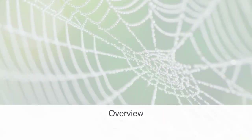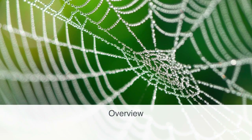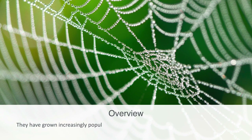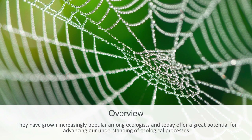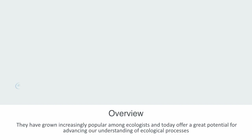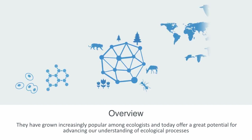Up until now we've been talking about ecosystems as networks through which energy and resources flow, but in this module we'll be defining more clearly what we mean by this as we talk about ecological networks — an active area of research within contemporary ecology. Since the 1970s, when networks were imported from physics and the social sciences into ecology, they have grown increasingly popular among ecologists. Today they offer potential for advancing our understanding of ecological processes, from the metabolic networks in our cells to the food webs within an ecosystem to the global networks of animal migration.